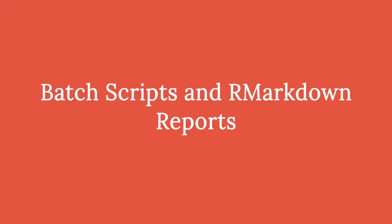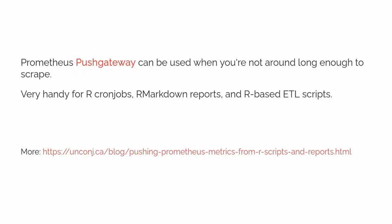For some things, Prometheus's pull-based model is inconvenient. A good example is automated R Markdown reports that run regularly — they generally aren't around long enough for Prometheus to be told where they are and scrape them. The same is true for cron jobs or R-based ETL workflows. The Prometheus community does have an answer: the Prometheus Push Gateway, which supports a simple API so that you can push metrics from short-lived applications, and then Prometheus itself will scrape the Push Gateway.